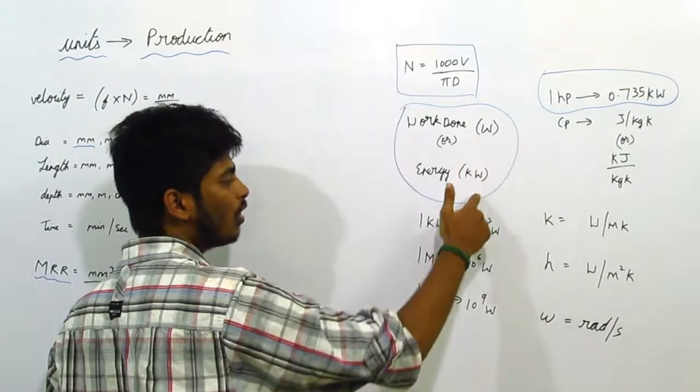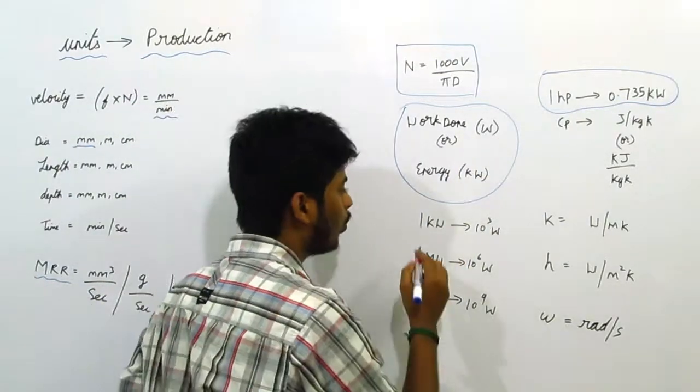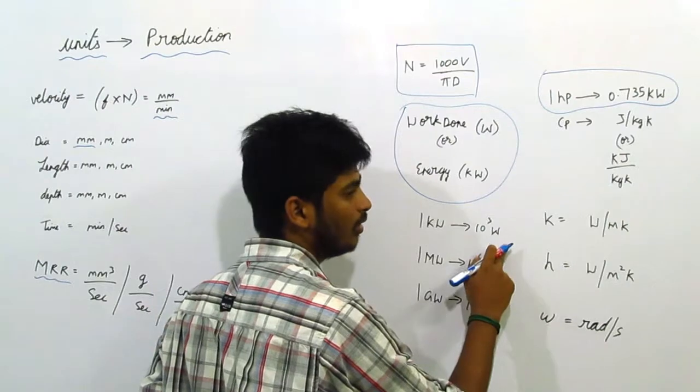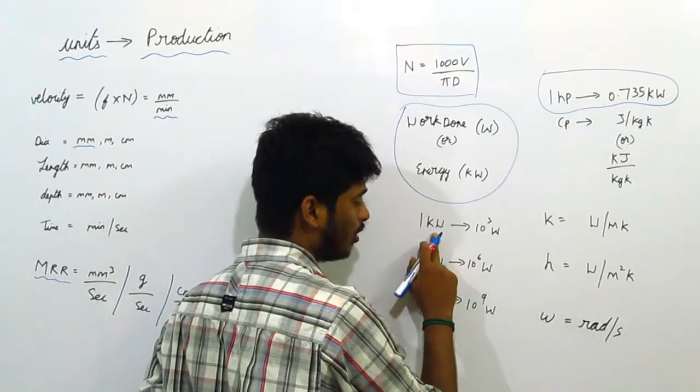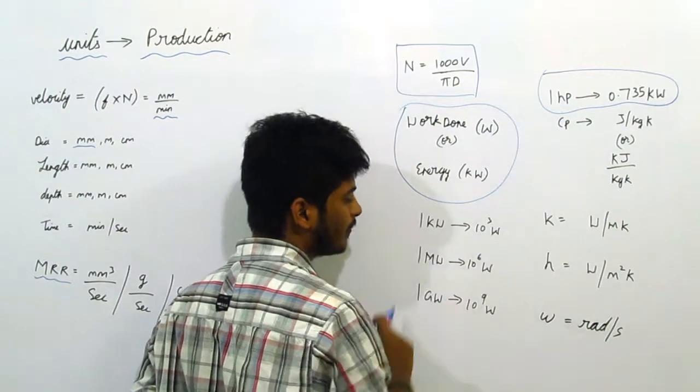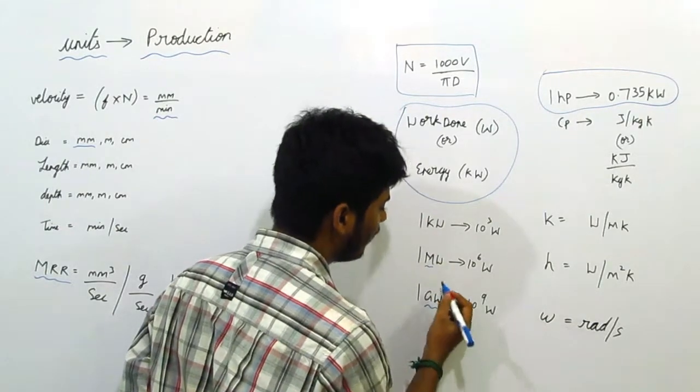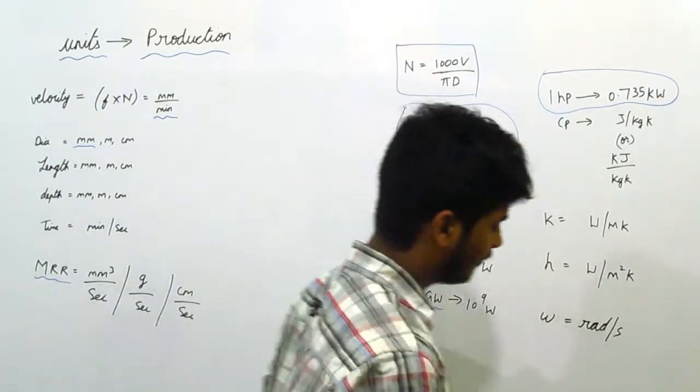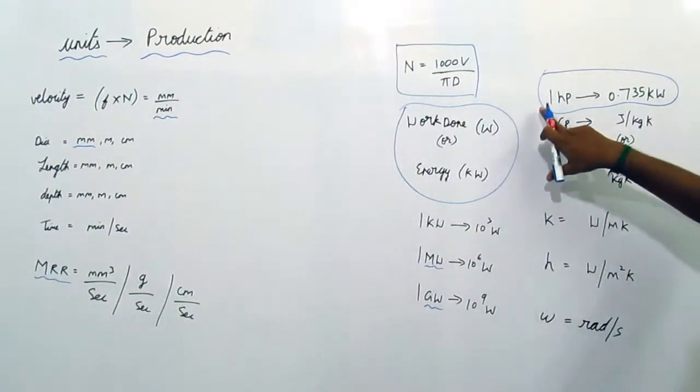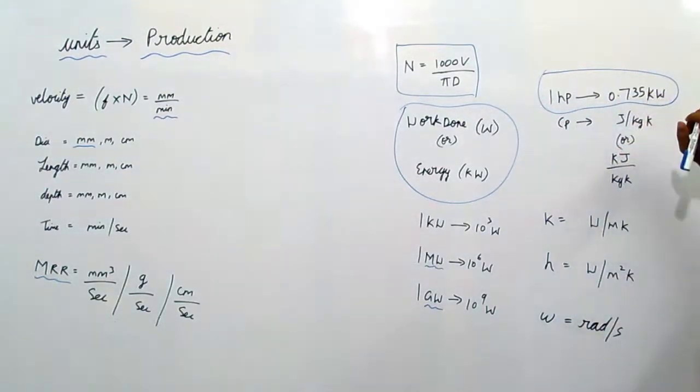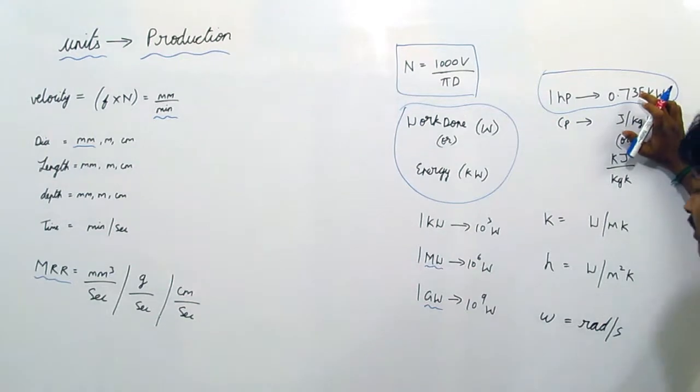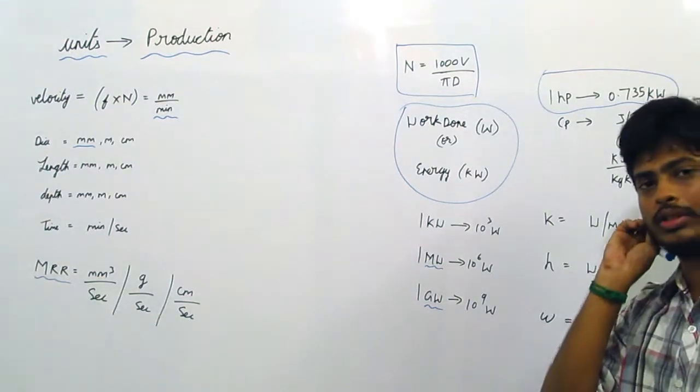We know that one kilowatt is equal to 10³ watts. Mega refers to 10⁶ and giga refers to 10⁹. One horsepower is 0.735 kilowatt, or it is also given by 0.746 kilowatt.